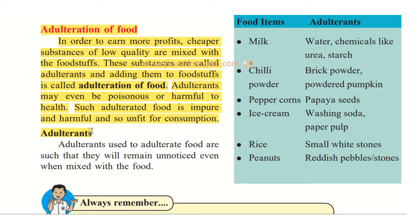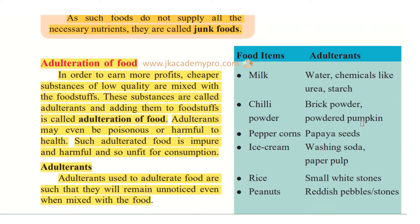Adulterants are used such that they remain unnoticed even when mixed with food. Let's look at examples: in milk, they add water, and sometimes chemicals like urea and starch, which is very dangerous and not easily noticeable.